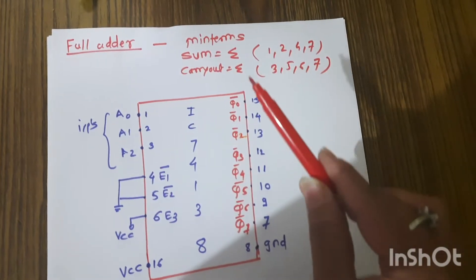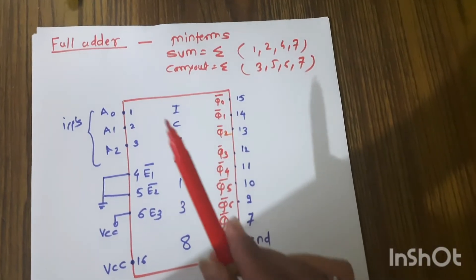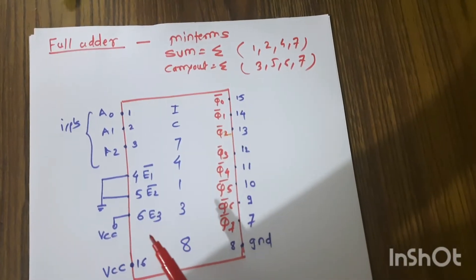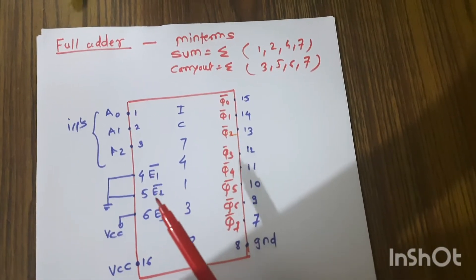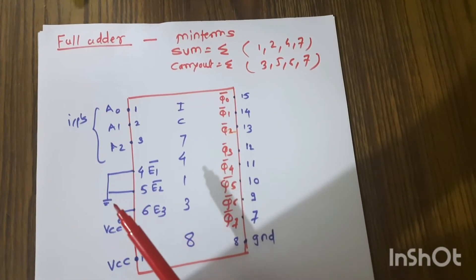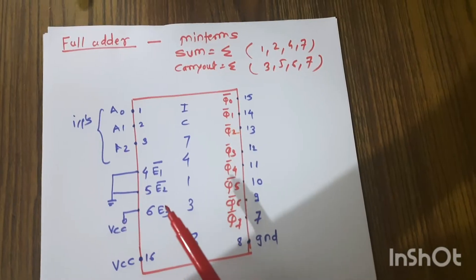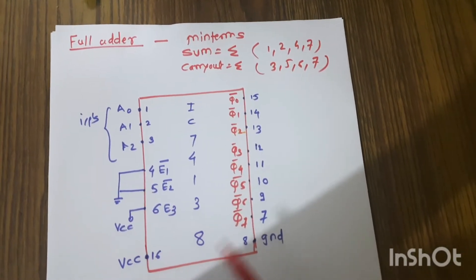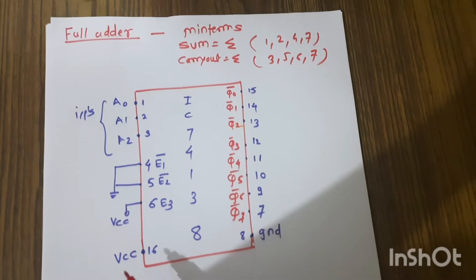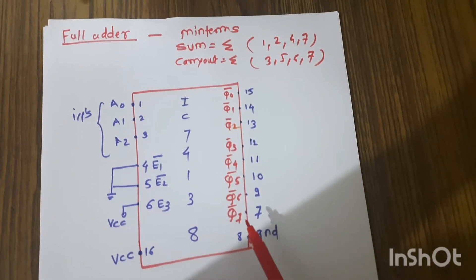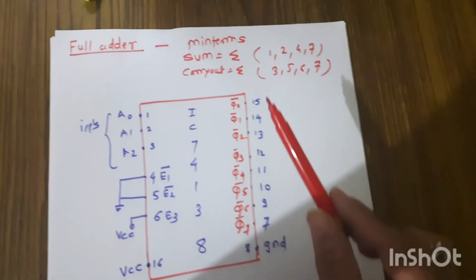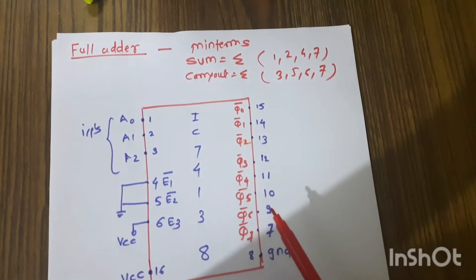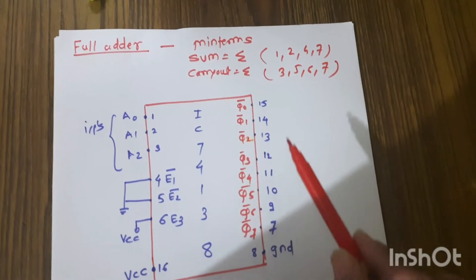It has eight outputs. Pins 1, 2, 3 are the inputs; pins 4, 5, 6 are the enable pins. Pins 4 and 5 are active low, so they are connected to ground, and E3 is active high so it is connected to VCC. It is a 16-pin IC, so pin 16 is VCC and pin 8 is ground.